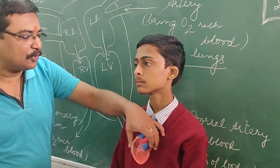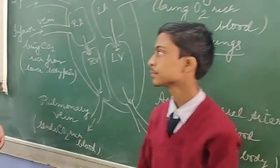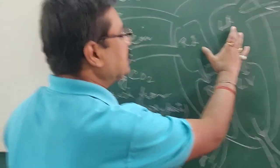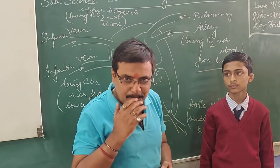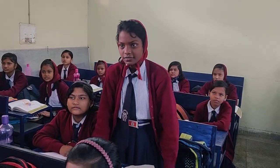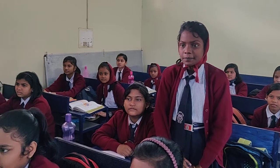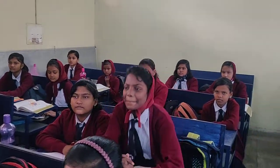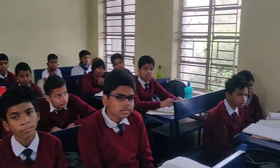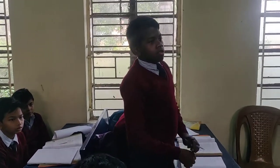Now let's understand from the diagram. We have the upper chambers labeled. Let's ask Swati — L-A means Left Auricle, very good. And L-V means Left Ventricle. Now Jagannath, what does R-A mean? Right Auricle — correct.